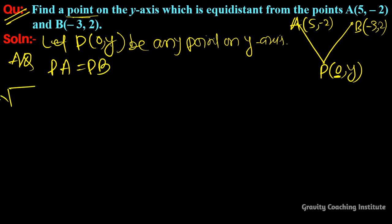So this will be √[(0-5)² + (y+2)²] and here we use √[(0-(-3))² + (y-2)²], which is √[(0+3)² + (y-2)²].